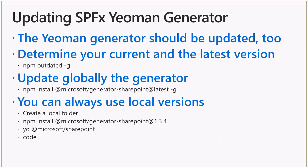To update the Yeoman generator, the npm syntax is exactly the same as before: npm install @microsoft/generator-sharepoint@latest, and use -g to update it at the global level. You also need to keep in mind that you can play locally in a local folder with a different version of the Yeoman generator. You simply need to create a local folder, run npm install of @microsoft/generator-sharepoint at any specific version you want to target, and if you execute your Yeoman generator in that specific folder, you'll have that locally installed version — useful for testing multiple versions of the SharePoint framework within the same environment.